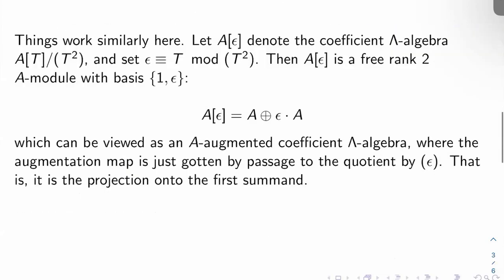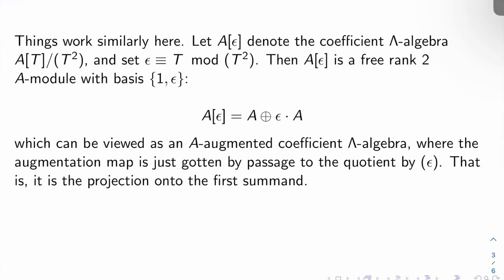Okay, so we're going to play the same game here, basically. Let A[ε] denote the coefficient Λ-algebra A[t]/(t²), and set ε equal to t mod t². Then A[ε] is a free rank two A-module with basis 1, ε. So we get a similar decomposition that we had last video when we were looking at k[ε].